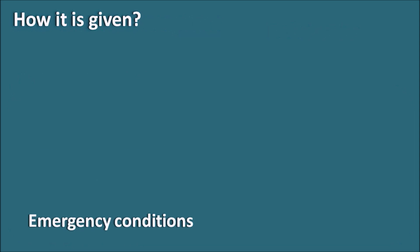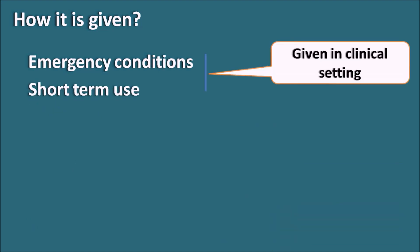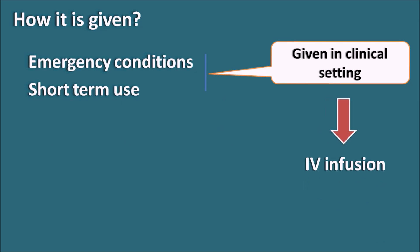How is it given? Dobutamine is used in emergency conditions like cardiogenic shock, as well as for short-term use like stress testing. It is always given in a clinical setting monitored by a physician. Because of this, it is given as an IV infusion — it is not available as a tablet or capsule, and is given only in a hospital setting.